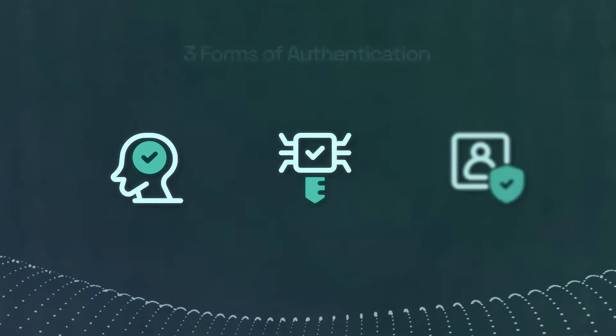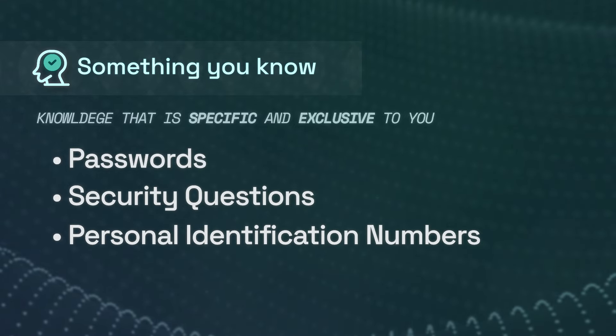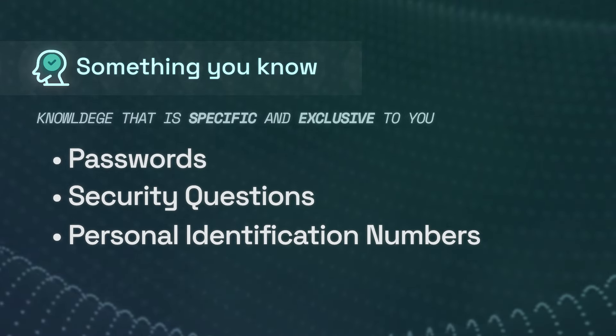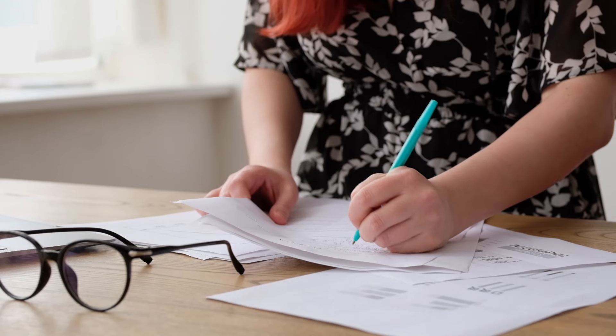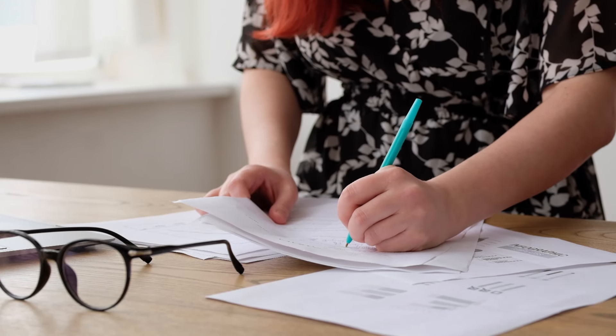Something you know is easy enough — your password, for example, is something you know, but this extends to things like your security questions at the bank, your PIN number, and even your signature, since you're the only one who knows exactly how you sign it. But as mentioned, knowledge-based security is prone to being breached — just ask anyone who went through the public school system how easy it is to forge a signature.